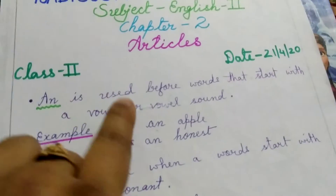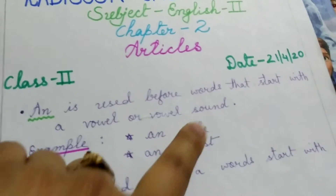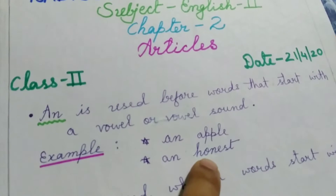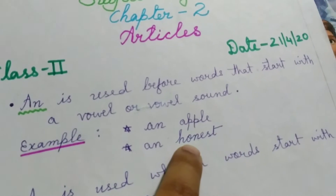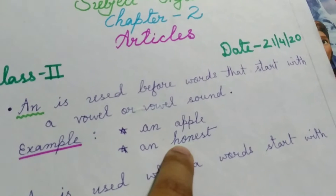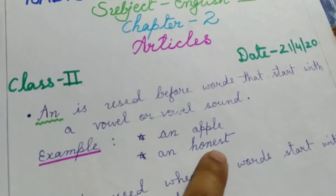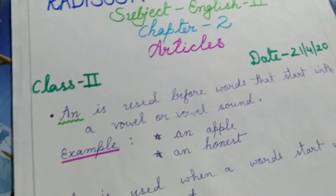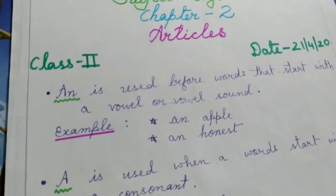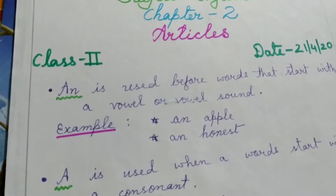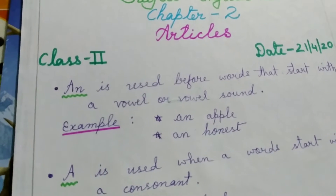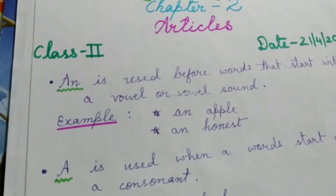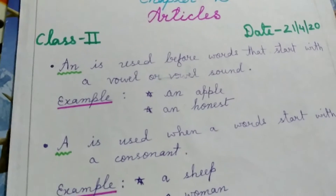Or vowel sound se kya matlab hai? Like you can see this example: 'Honest.' What do we pronounce? H-O-N-E-S-T is written, but H is silent. Honest starts with a vowel sound — O is the vowel sound. So we use AN before it.